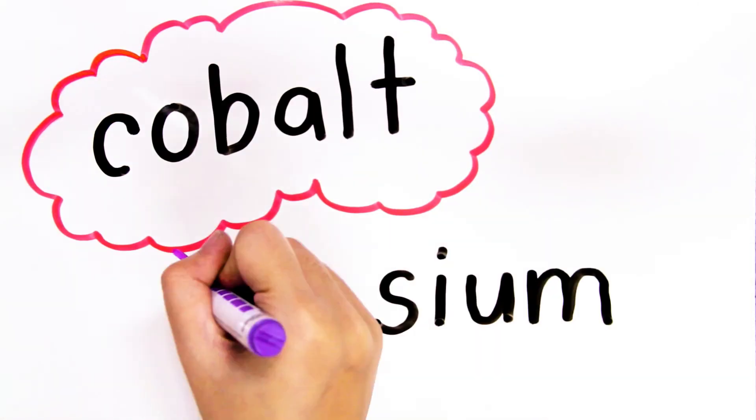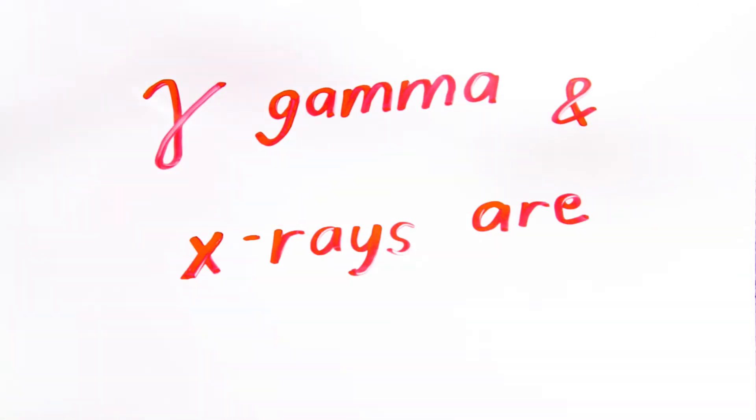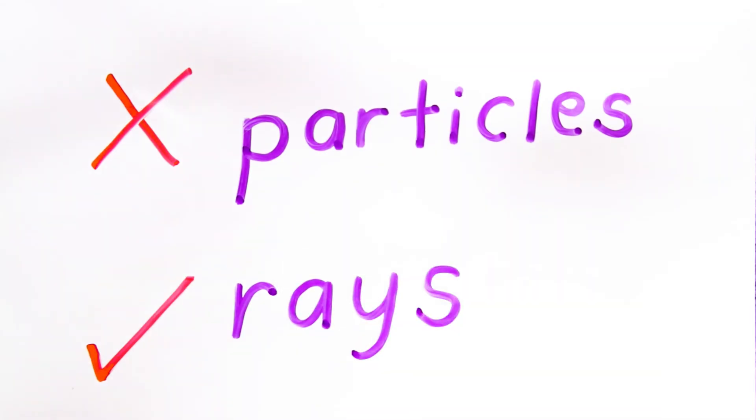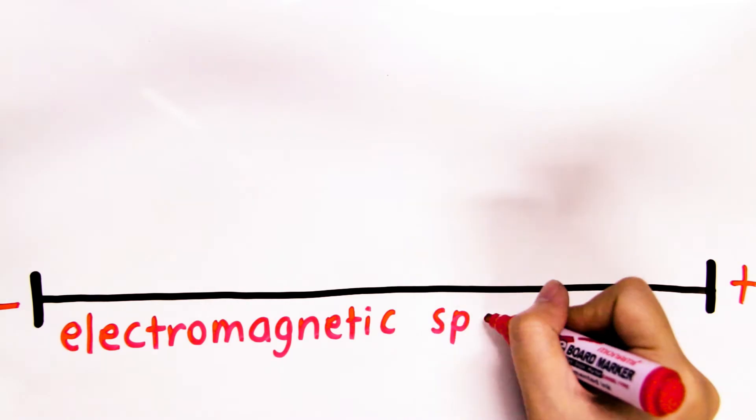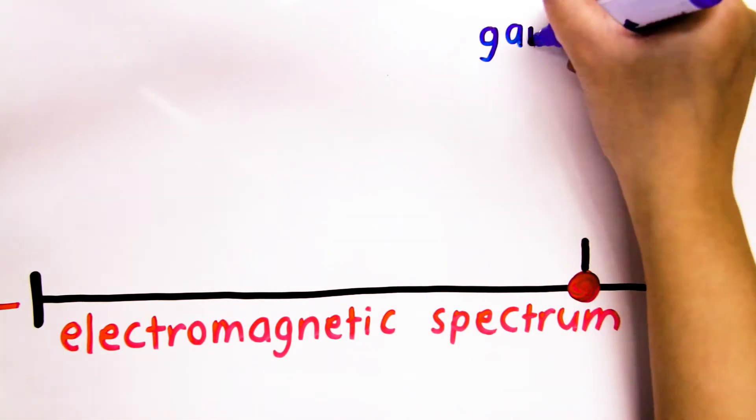Emitted from cobalt or cesium, gamma and x-rays are not particles, but rays. As discussed in the previous episode, they are part of the higher end of the electromagnetic spectrum.